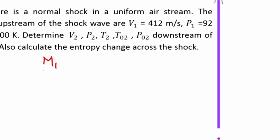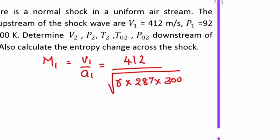Here if you look at M1, this is V1 by A1, and this is V1 which is 412 divided by square root of gamma, that is gamma 1.4 multiplied by R 87 multiplied by T1, T1 is 300 Kelvin. This turns out to be 1.186.